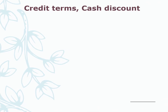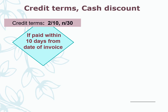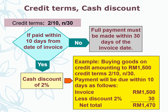Credit terms in cash discount — for example, credit terms 2/10, n/30. If payment is made within 10 days from the date of invoice, they can get a cash discount of 2%. For example, buying goods on credit amounting to 1,500 with credit terms 2/10, n/30 — payment made within 10 days: Invoice 1,500, less 2% discount of 30, and the net total to be paid is 1,470. But if payment is not made within 10 days, the full payment must be made within 30 days of the invoice date.